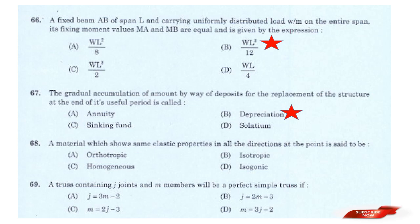Question: A material which shows the same elastic properties in all directions at a point is said to be? Options: Orthotropic; Isotropic; Homogeneous; Isogonic. Answer: Option B — Isotropic. The material which shows the same elastic properties in all directions is isotropic.